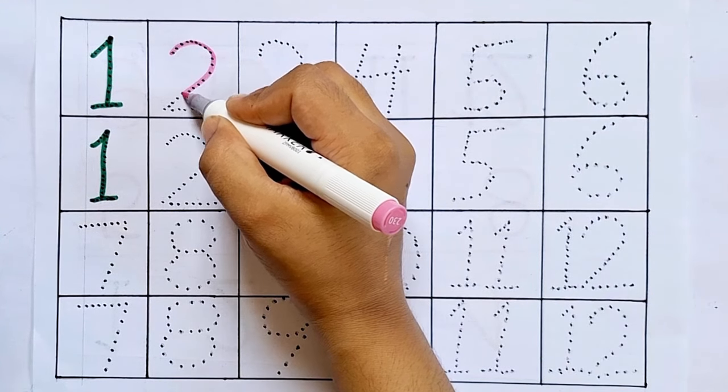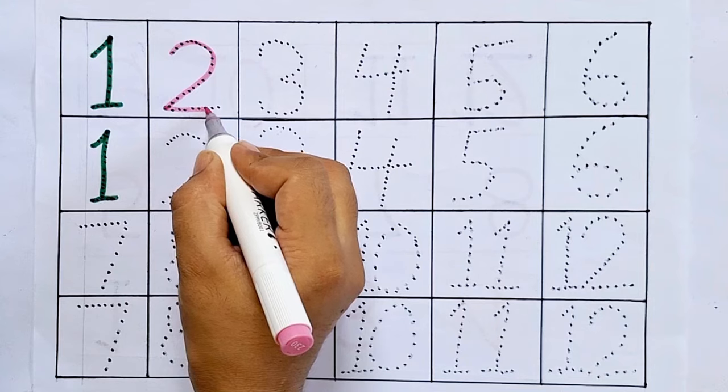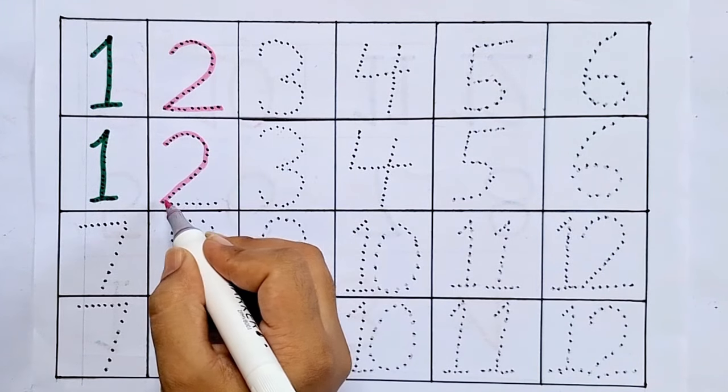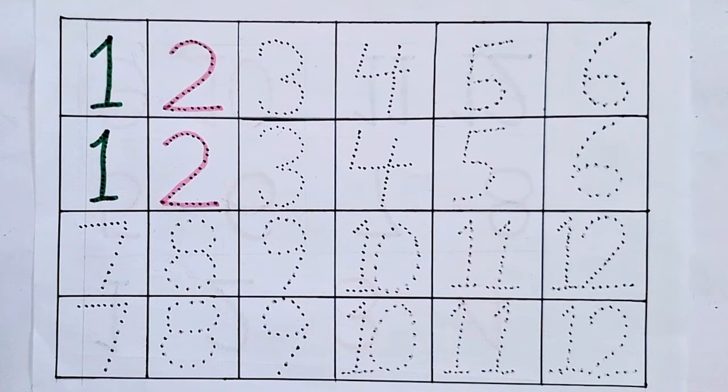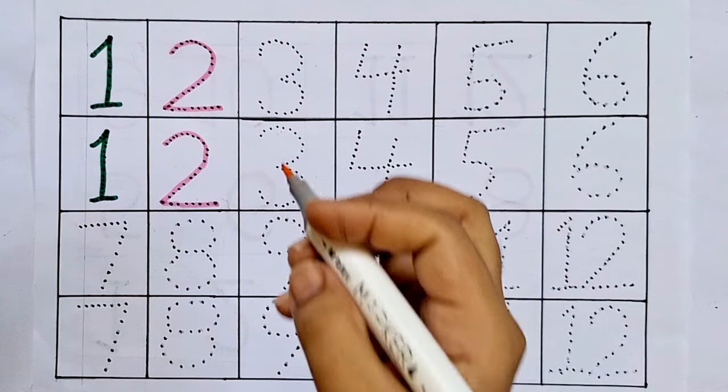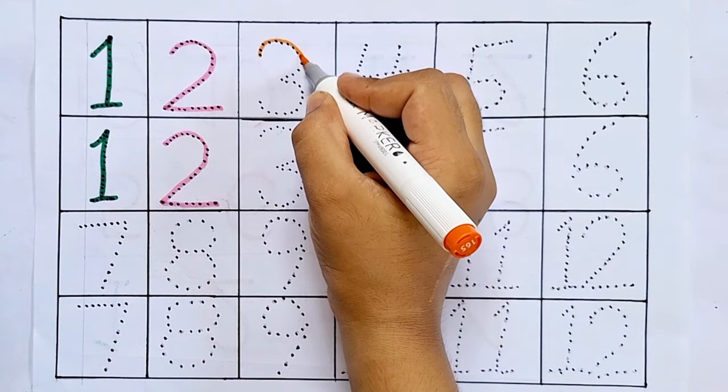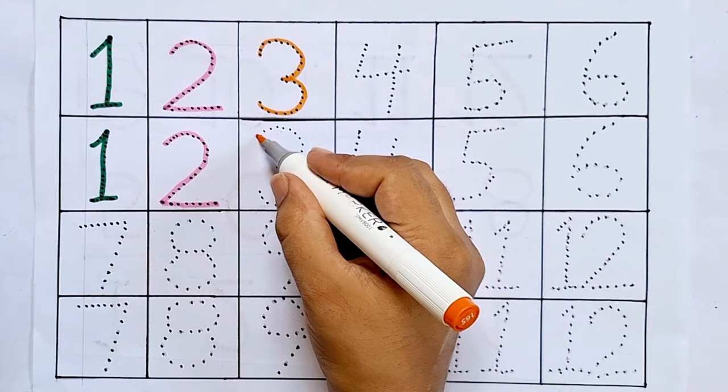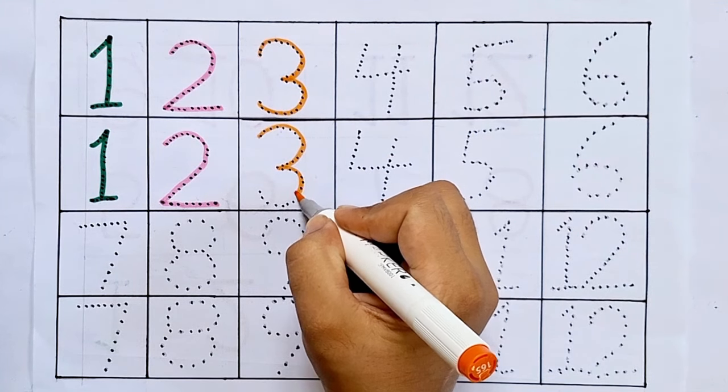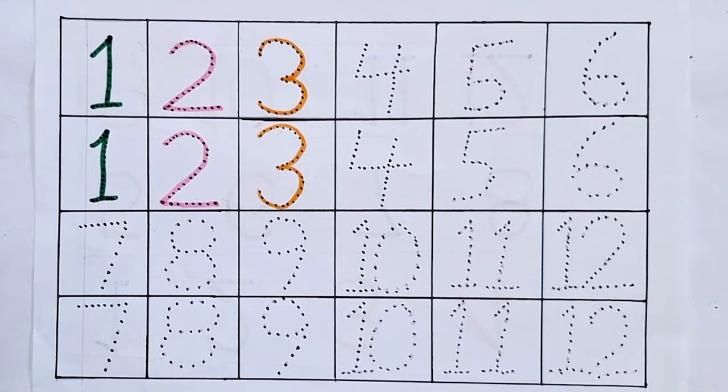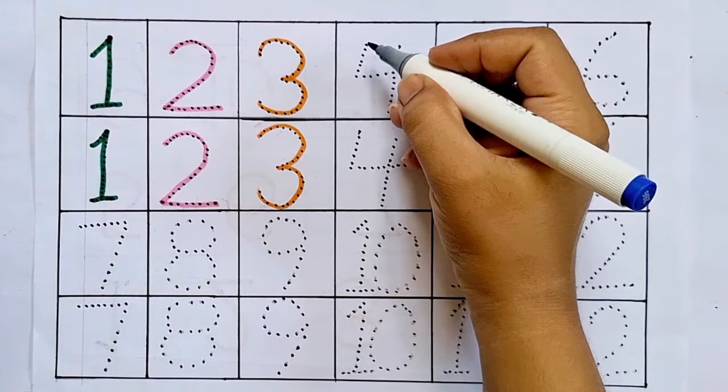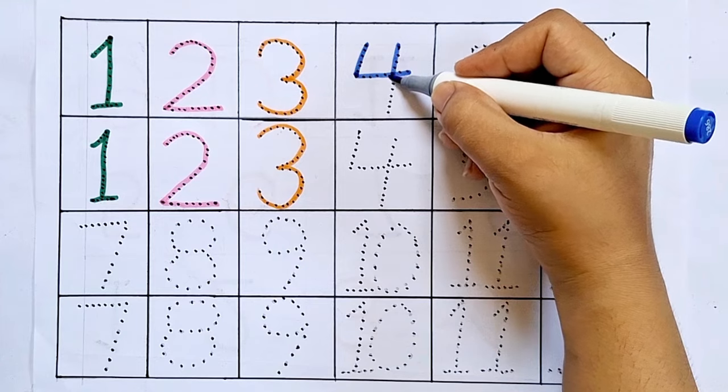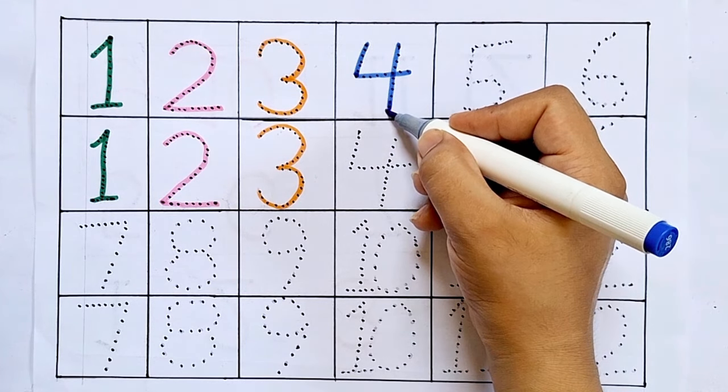Two. This is two. After one comes two. Three. This is three. After two comes three. Four. This is four. After three comes four.